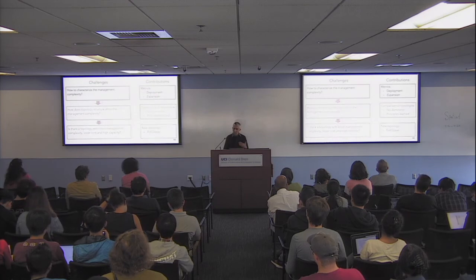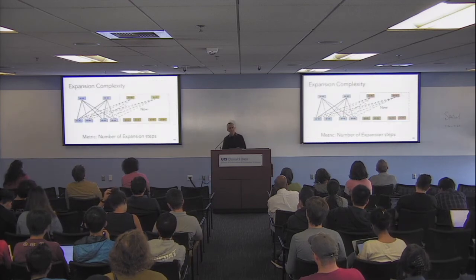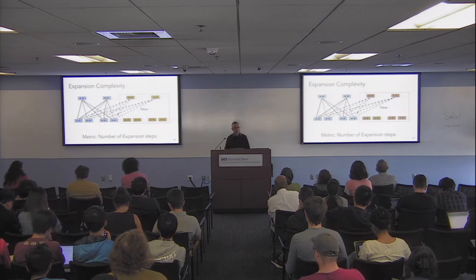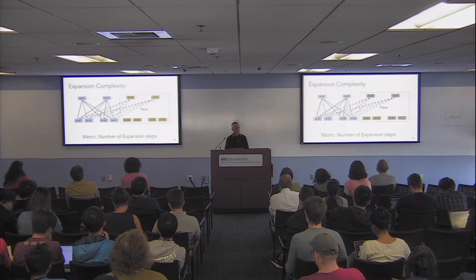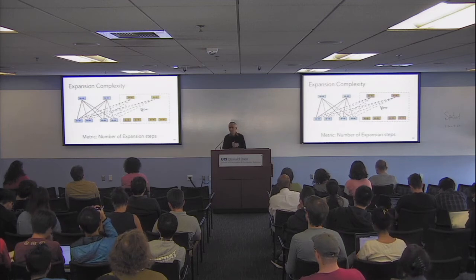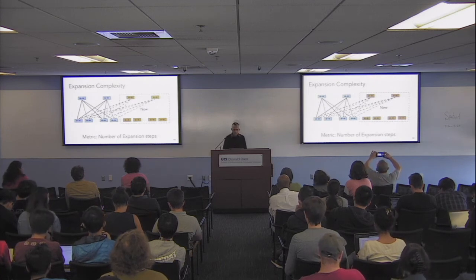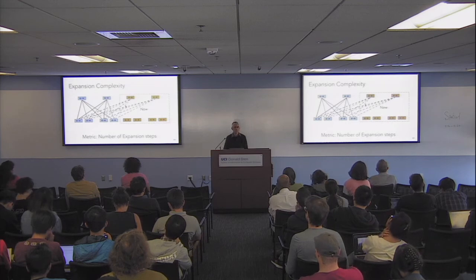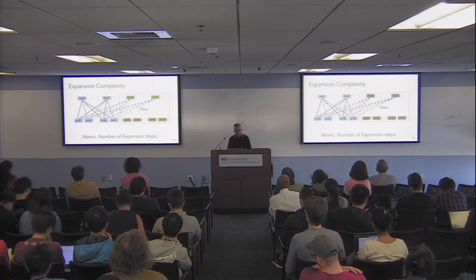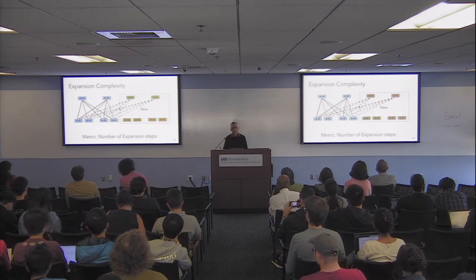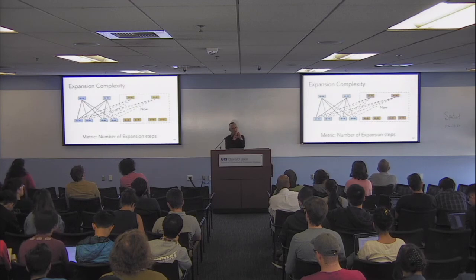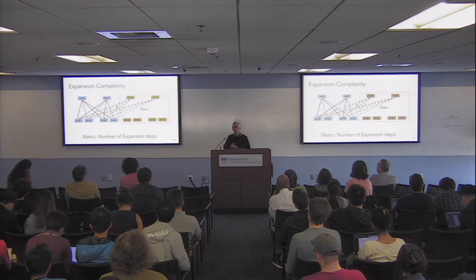The second thing we looked at is expansion metrics. Expansion is where you have a data center and want to add more capacity. One way is to completely close it down and rewire everything, but people don't do that because you lose too much capacity. Instead, they let some links work and rewire a subset — this is called expand or upgrade in place. You reduce capacity a little, let it carry traffic, then expand; then take out other links and rewire them. One simple measure of complexity is the number of expansion steps.